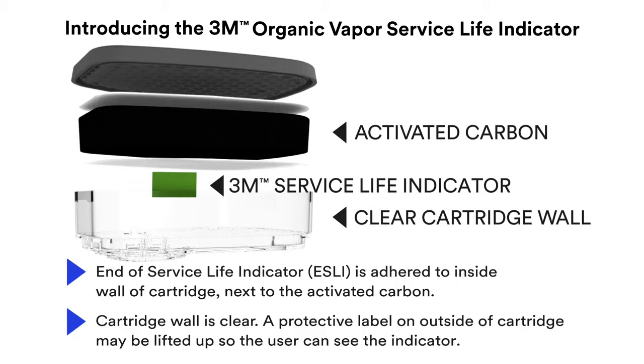In the 3M organic vapor cartridge 6000i series, the 3M Service Life Indicator, or ESLI, is located inside the cartridge next to the activated carbon. The cartridge wall is clear so light can enter and exit.